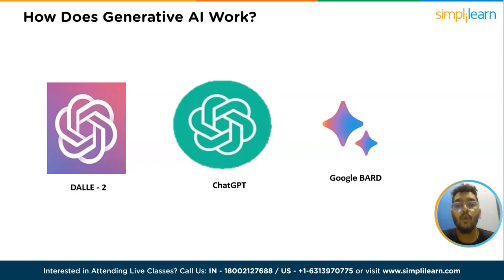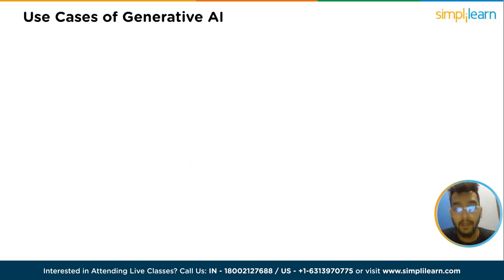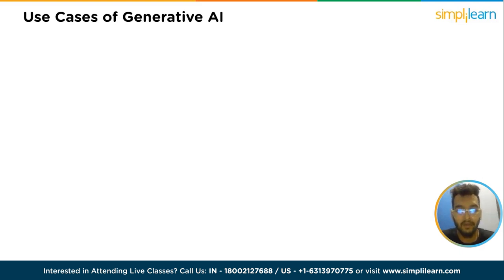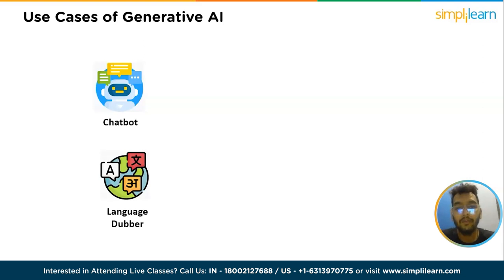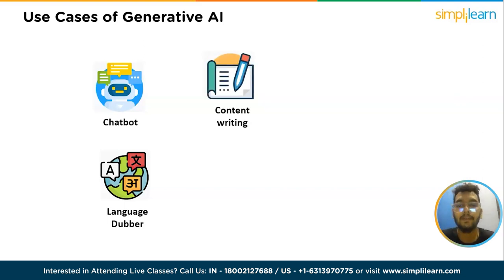Let's see what are the use cases of generative AI. Generative AI has broad applicability and can be employed across a wide range of use cases to generate diverse forms of content. Recent advancements like GPT have made this technology more accessible and customizable for various applications. Some notable use cases include: chatbot implementation — generative AI can be utilized to develop chatbots for customer service and technical support; language dubbing enhancement — in movies and educational content, generative AI can improve dubbing in different languages ensuring accurate and high-quality translation; and content writing — generative AI can assist in writing email responses, dating profiles, resumes, and term papers, generating customized content tailored to specific requirements.